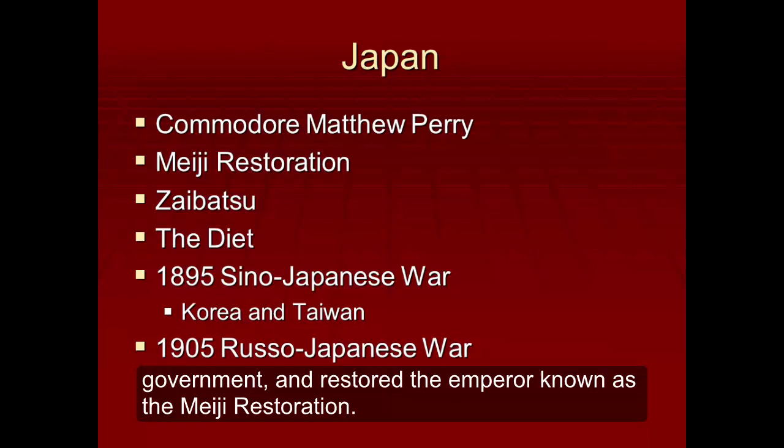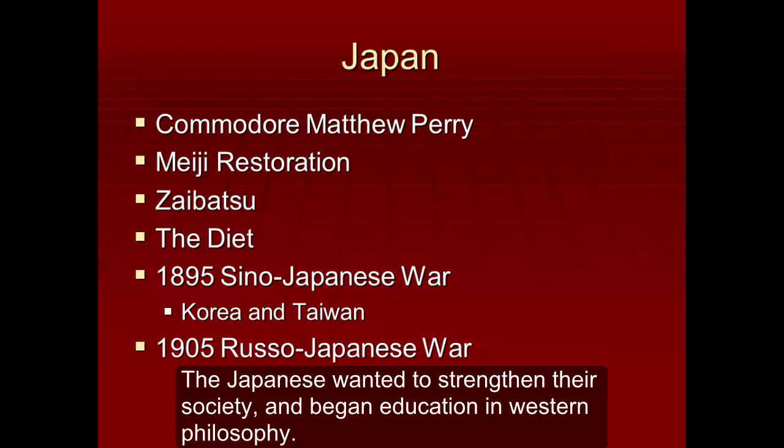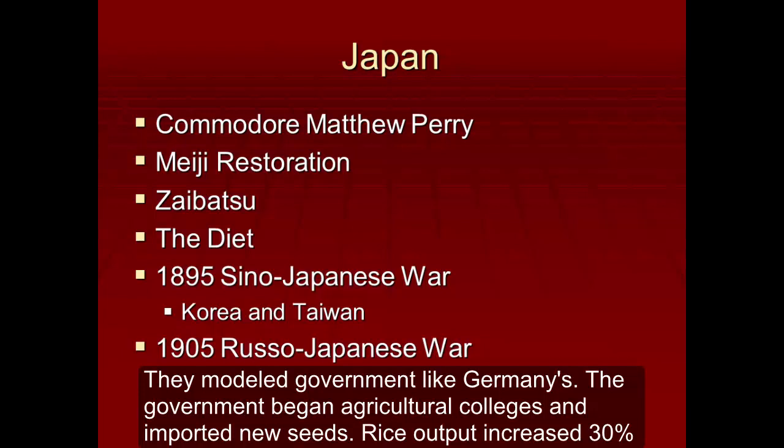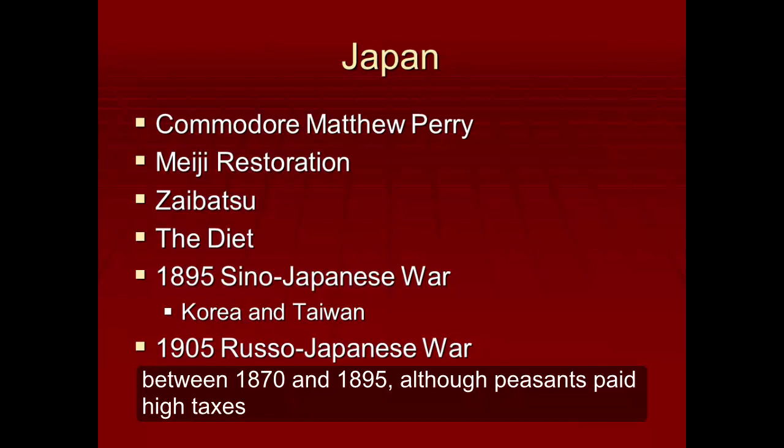The Japanese wanted to strengthen their society and began education in Western philosophy. They modeled their government like Germany's. The government began agricultural colleges and imported new seeds. Rice output increased 30% between 1870 and 1895, although peasants paid high taxes. Taxes went to building railroads and a modern army and navy.